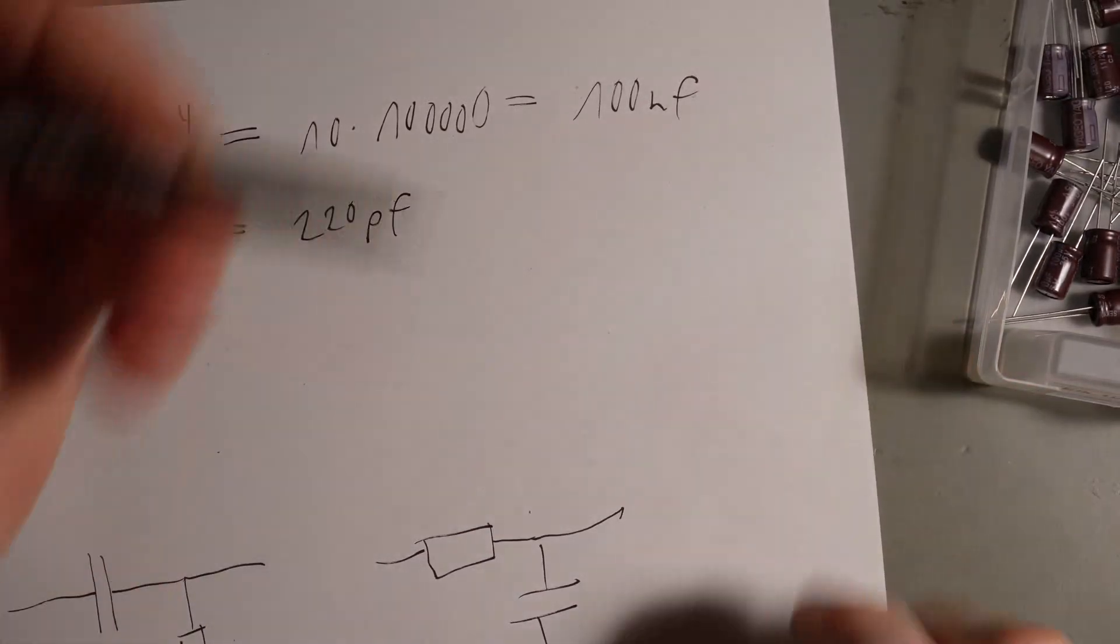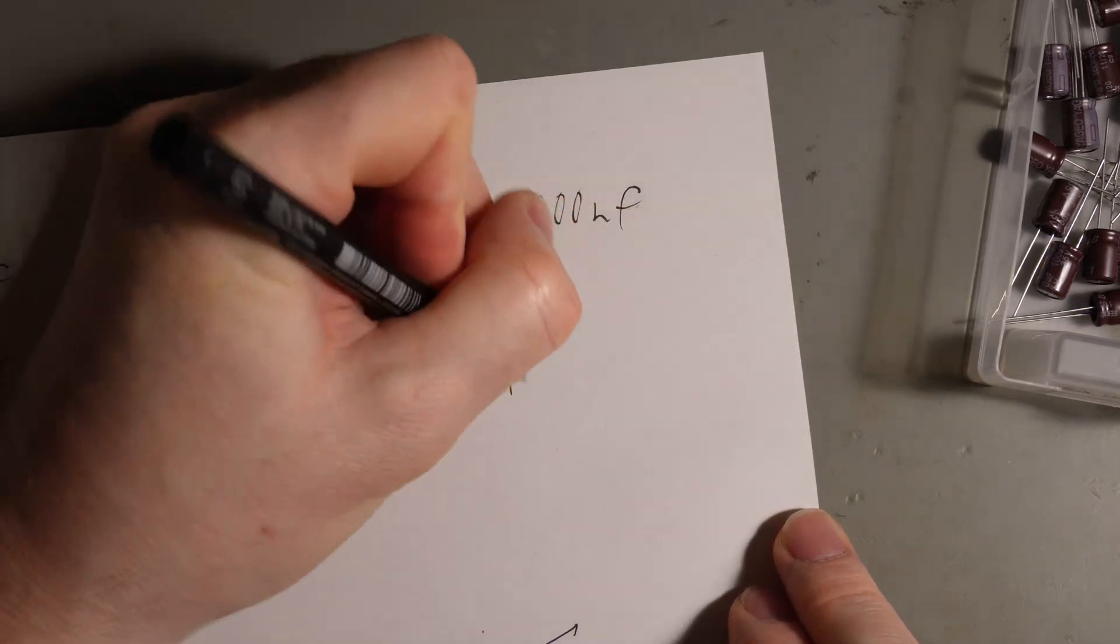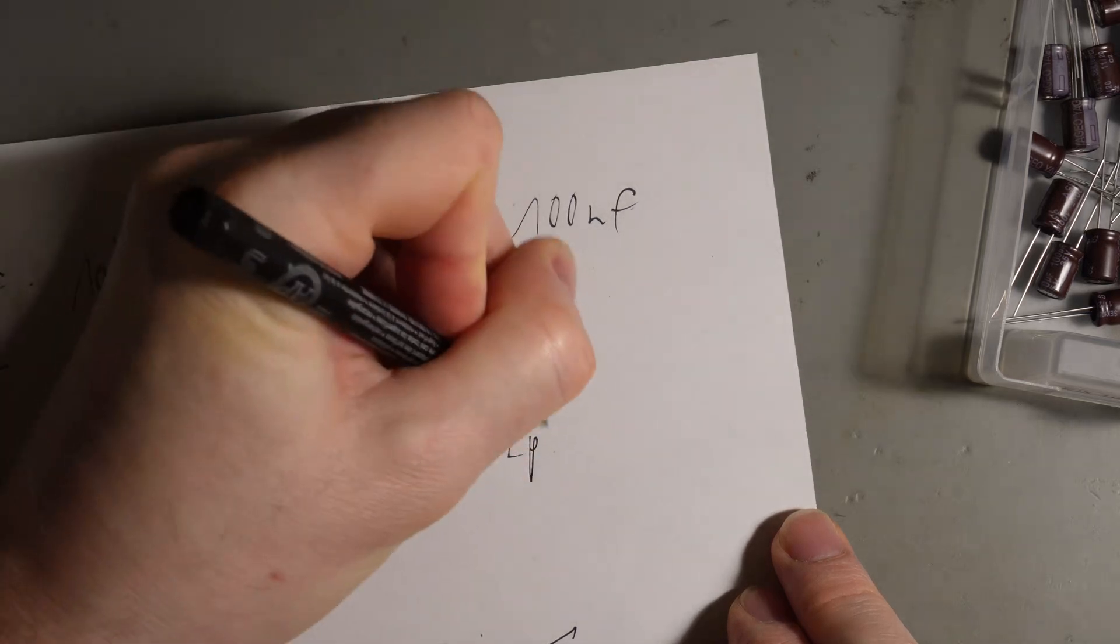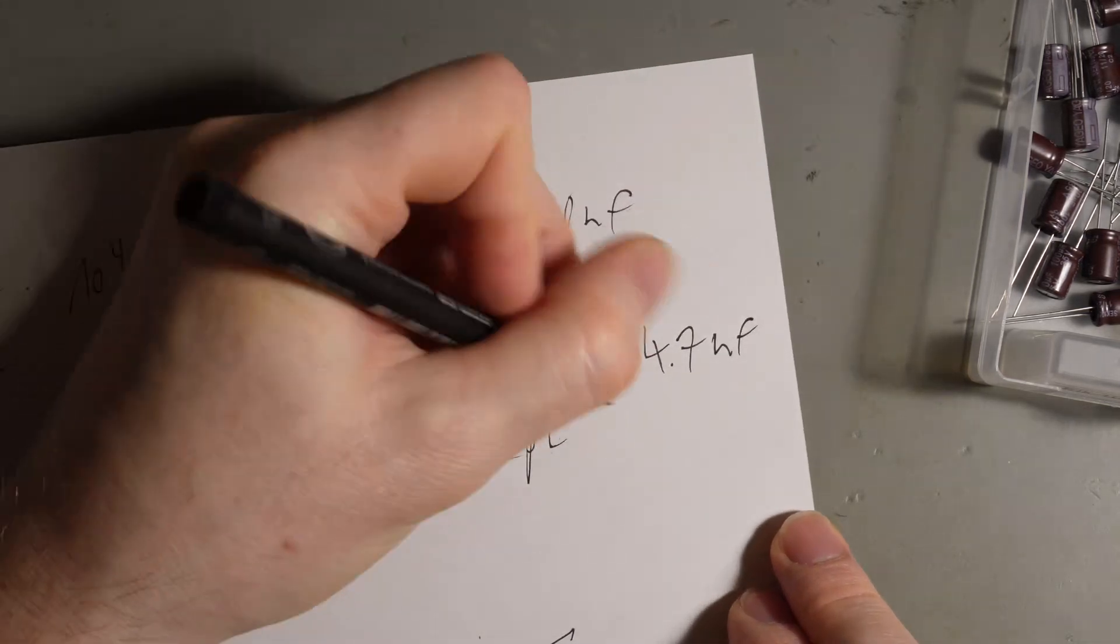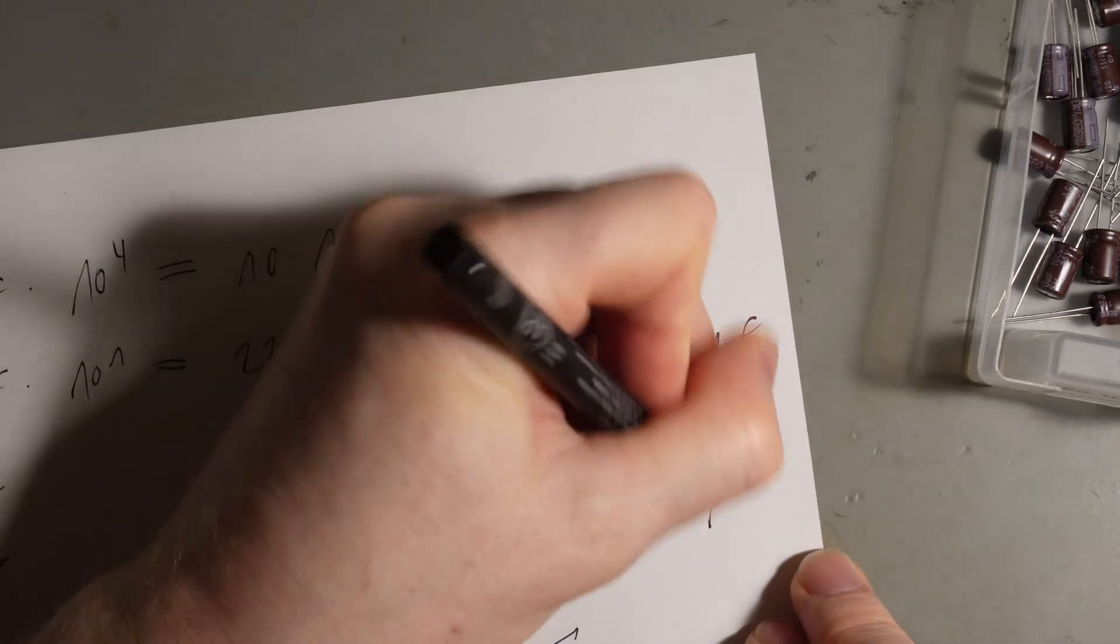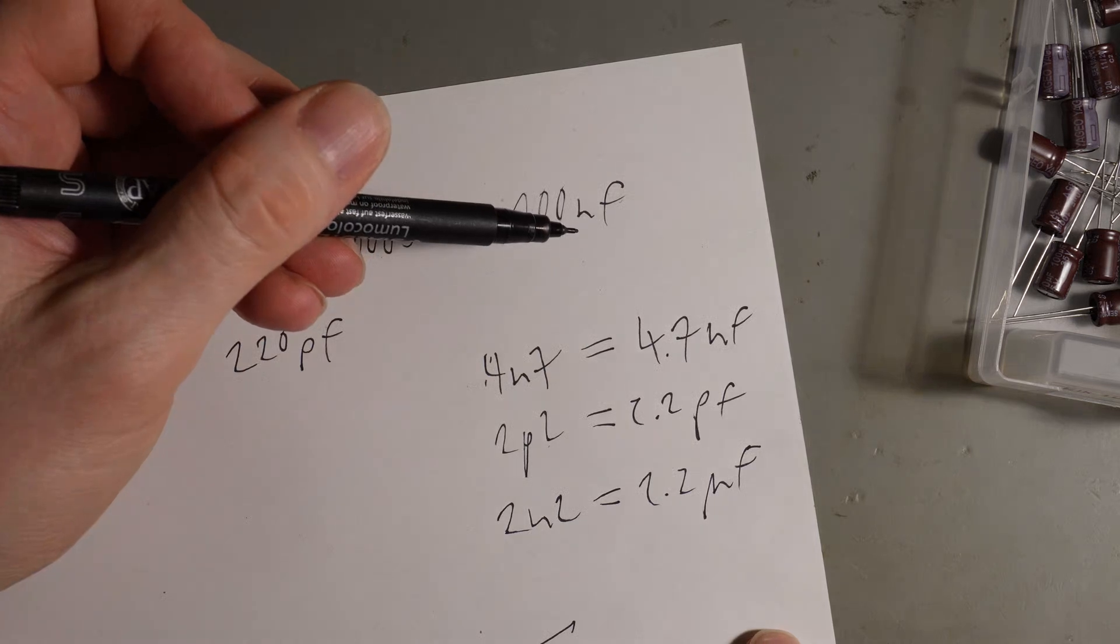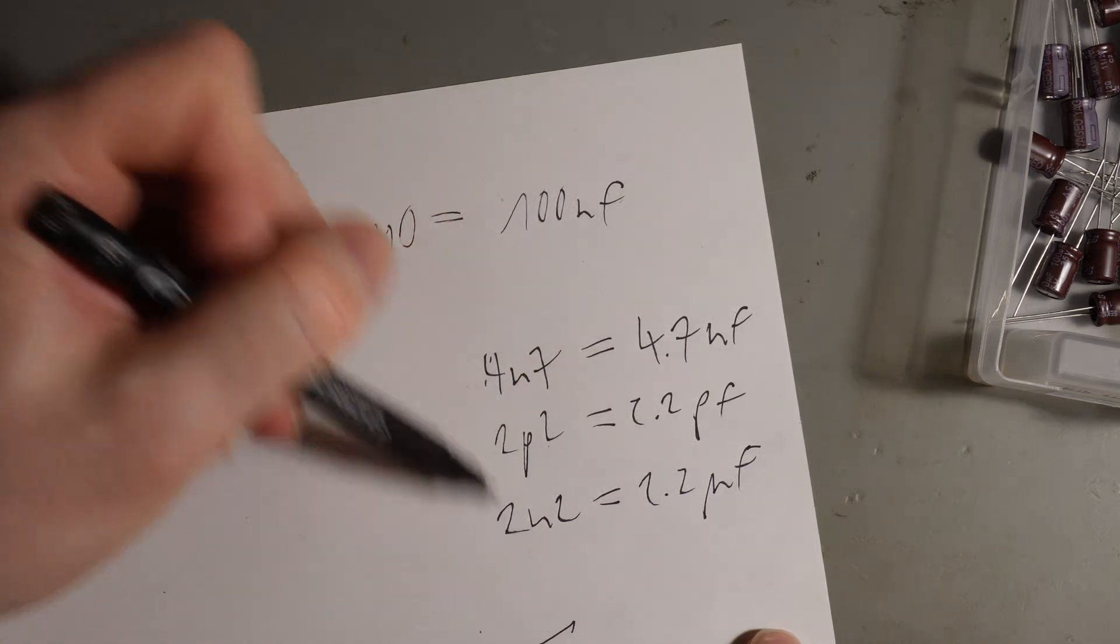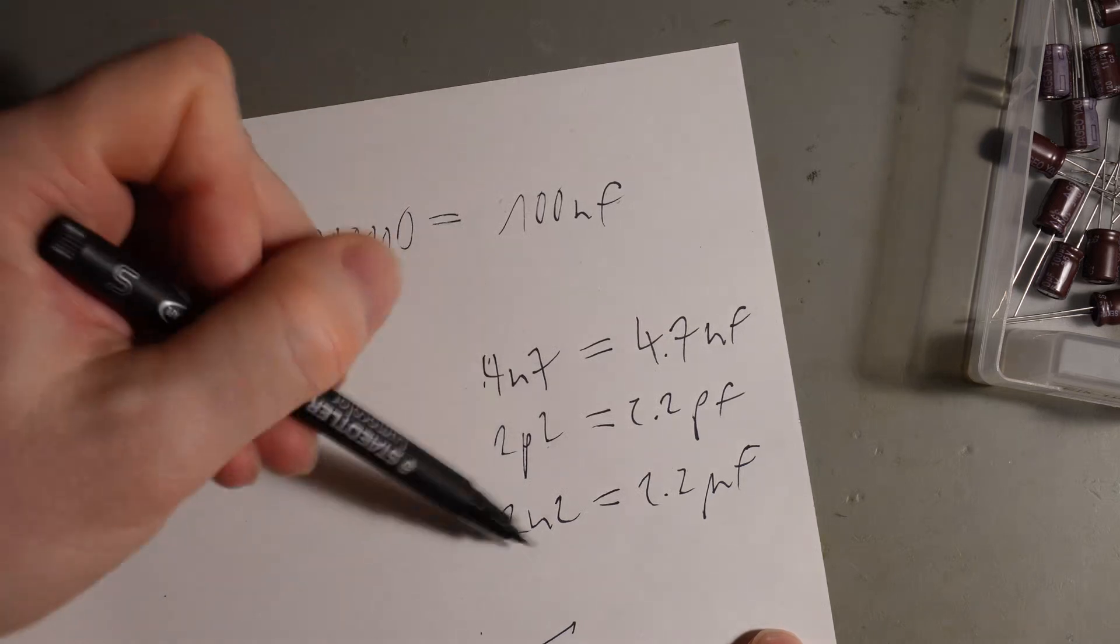Sometimes what you see in my schematics I use is like short forms, for example 4N7 or 2P2. The equivalent would be 4.7 nanofarad or 2.2 picofarad or 2U2 would be 2.2 microfarad. This is something I use in my schematics. This is because the dot here is easy to overlook and I actually use this notation a lot here.